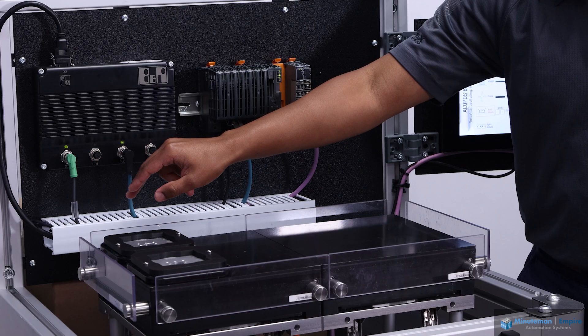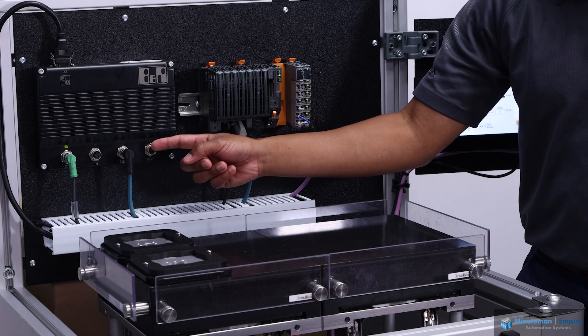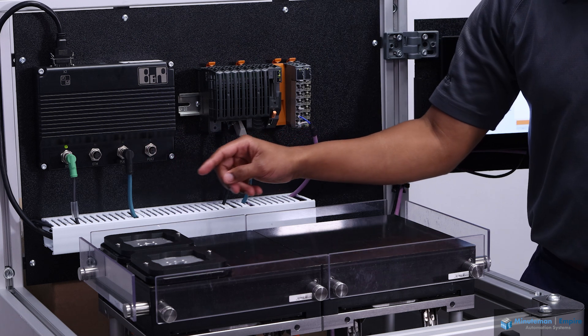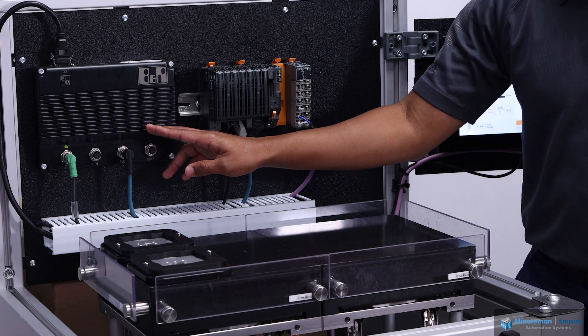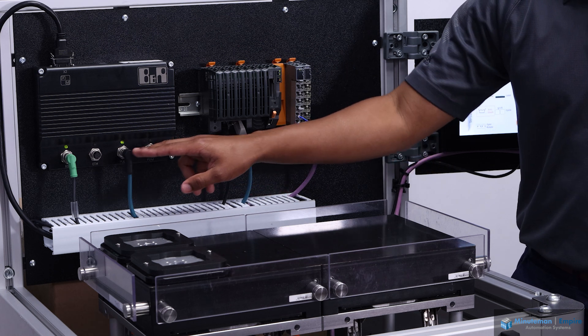Here is an ethernet port where if you wanted to do some programming through this device, and then these two connections are for power link. So if you had to daisy chain multiple 6D controllers together you can actually put them in series with these ports here.